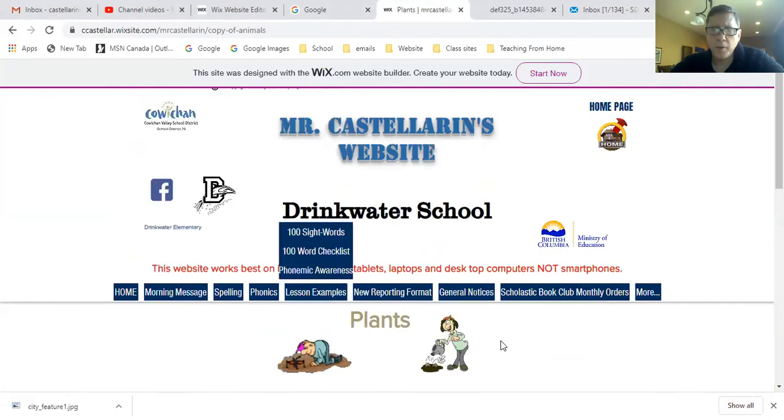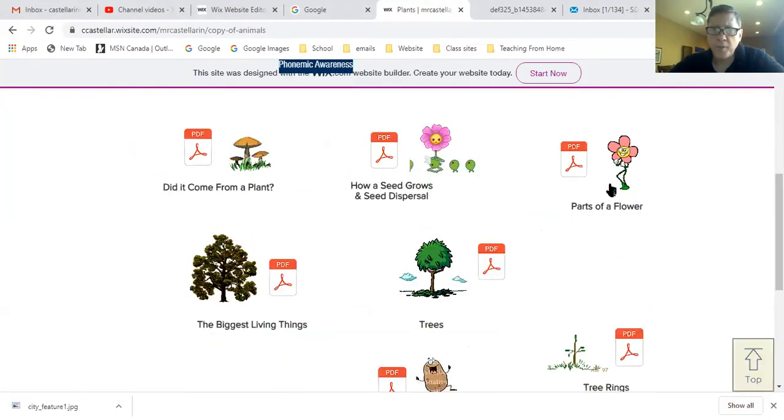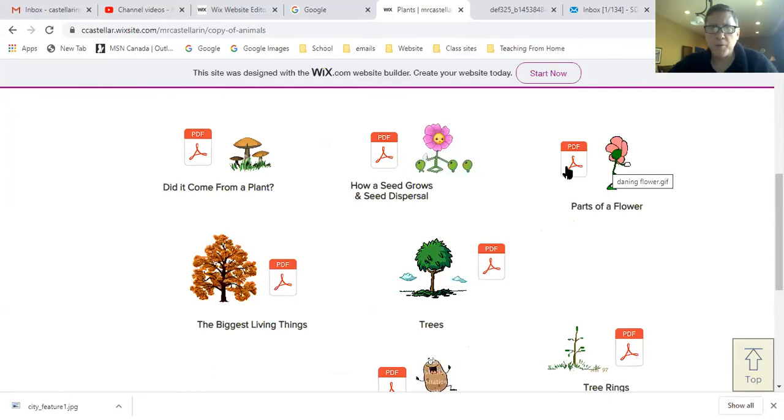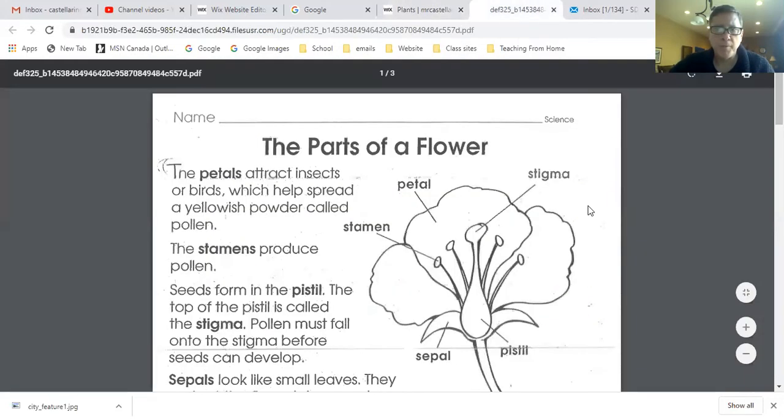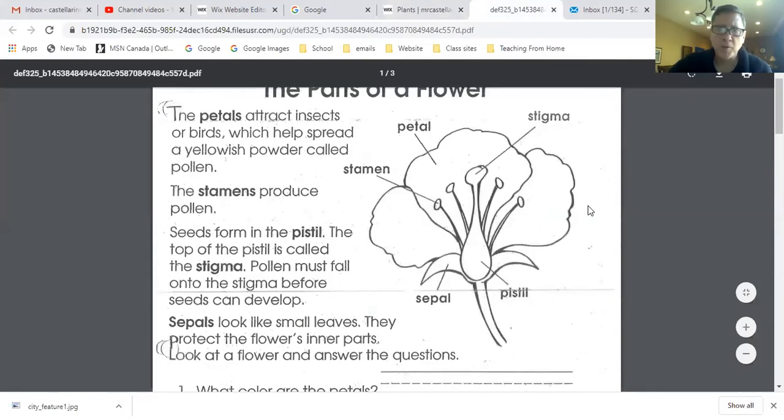And then over here with the dancing flower it says parts of a flower and there's actually some different worksheets in there that are a bit different from the ones that I've shown you. So here's one called parts of the flower and here's some of the parts we were just showing, so the taller middle part, it had the pollen all over it, called the stigma, the smaller little parts that were around it called the stamen.